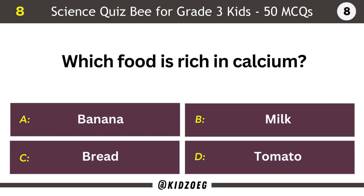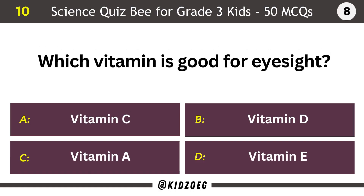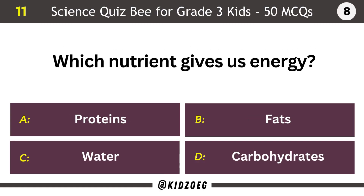Which food is rich in calcium? Milk. What nutrient helps with digestion? Fiber. Which vitamin is good for eyesight? Vitamin A. Which nutrient gives us energy? Carbohydrates.